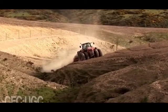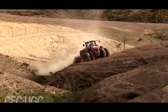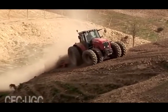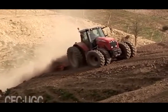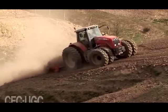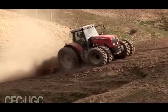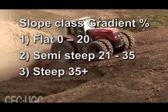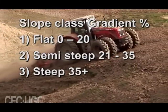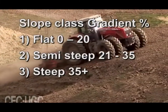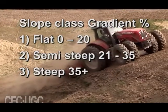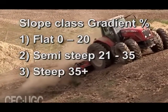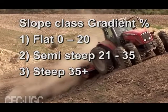Slope 5 is 51% and onwards. For practical purposes, three slope descriptions are used to determine machine suitability for harvesting operations. These practical classes are: flat — 0 to 20%; semi-steep — 21 to 35%; steep — 35% and above gradient.